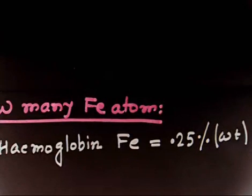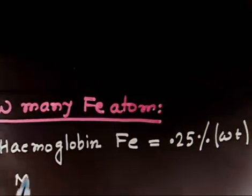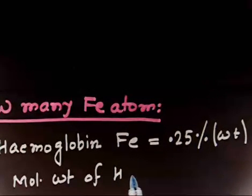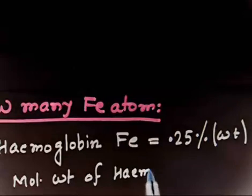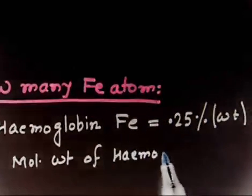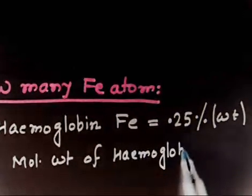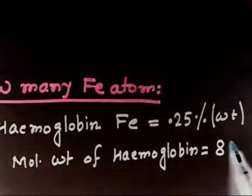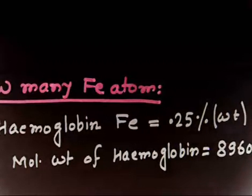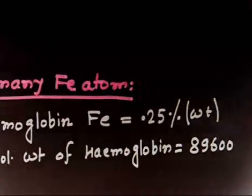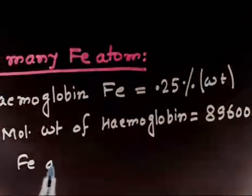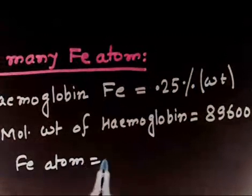The molecular weight of hemoglobin is also given — it equals 89600. The question says: calculate the number of iron atoms per molecule of hemoglobin. So, we have to find how many iron atoms are in one molecule of hemoglobin.